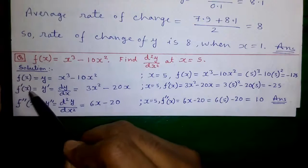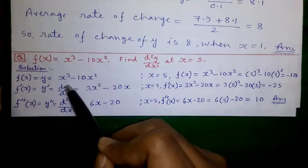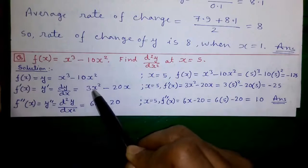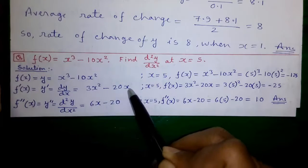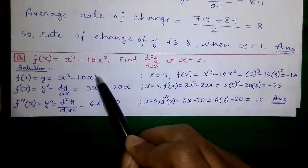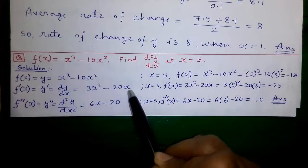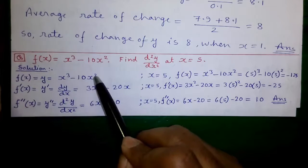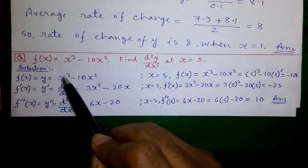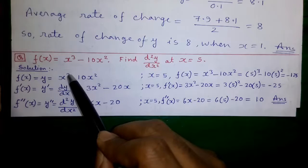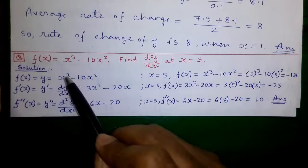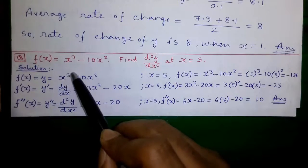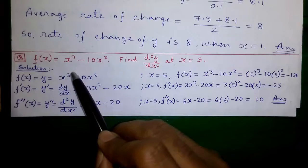We will find f'(x), also called y prime or dy/dx, which equals 3x² minus 20x. The logic for differentiation is: when you have x to the power of something, that power comes forward. So for x³, the 3 comes forward and the power reduces by 1.